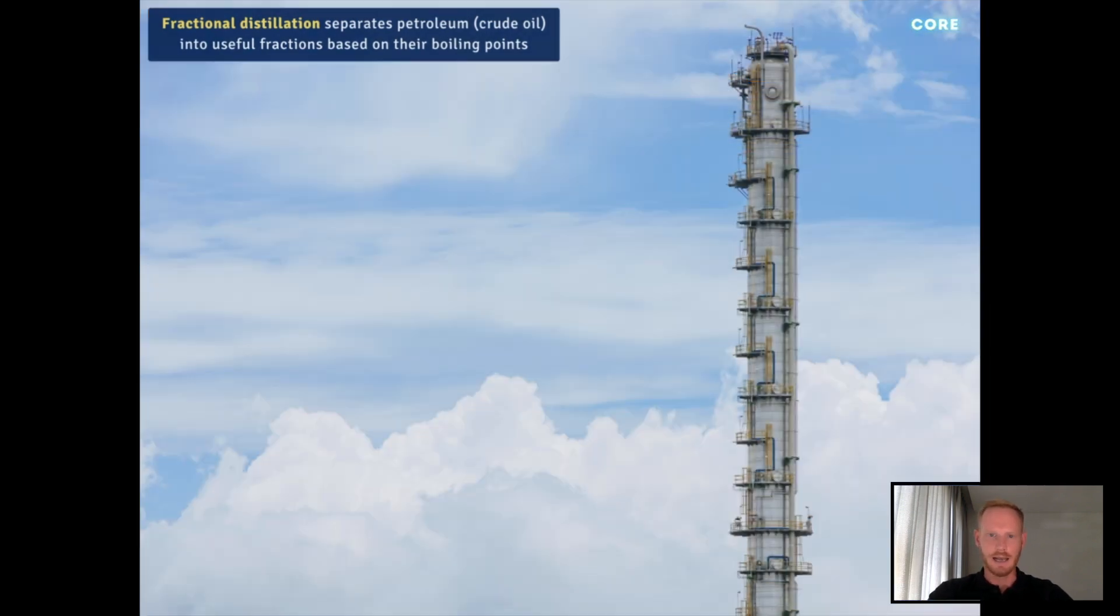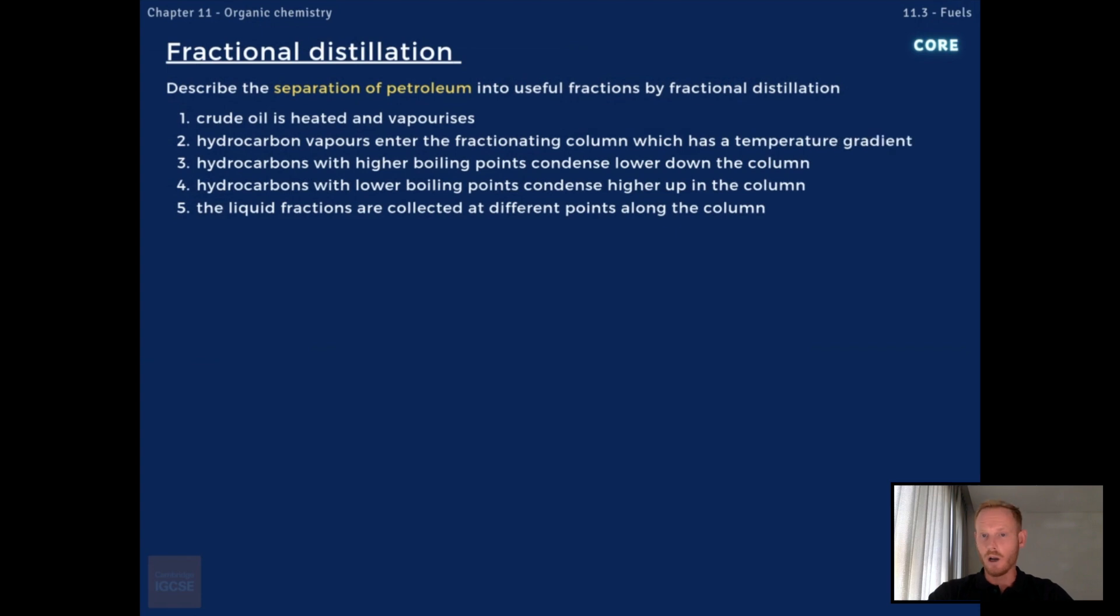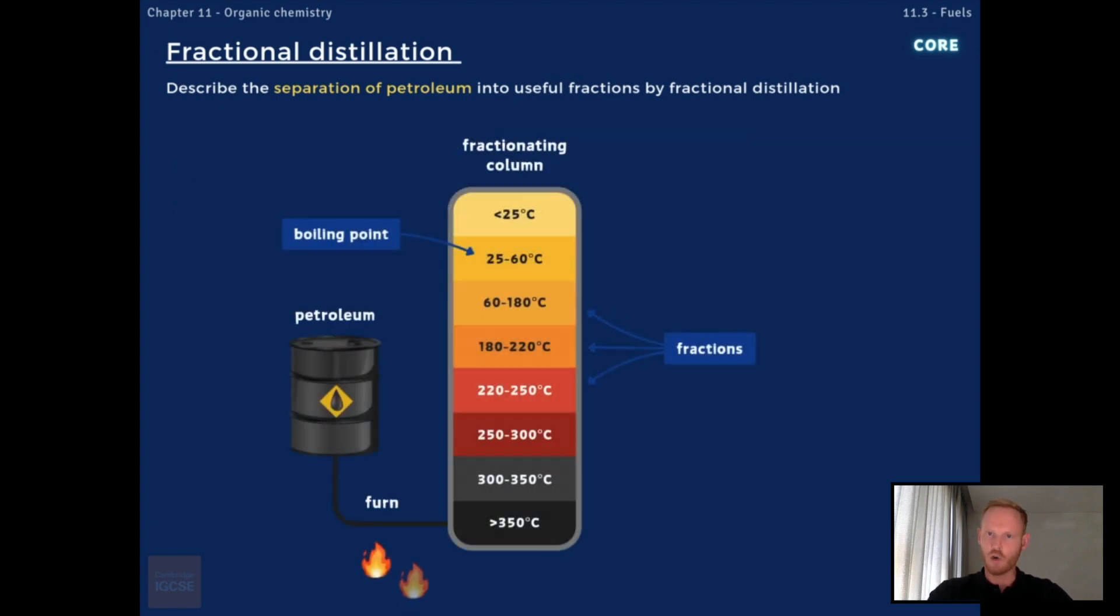So fractional distillation separates a mixture of hydrocarbons, like those found in petroleum, based on their boiling points, using a tall column called a fractionating column. Fractional distillation works because different sized hydrocarbons have different boiling points, and therefore condense at different temperatures. Firstly, the petroleum is heated, causing the hydrocarbons to vaporise.